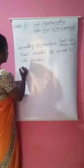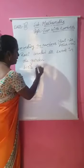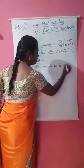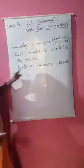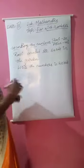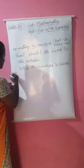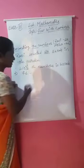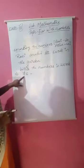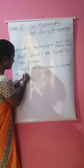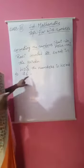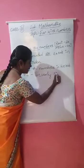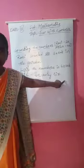Next topic: write the numbers in words. You know that last year we wrote numbers in words. For example, seventy-six — how will you write it? What is in the ones place and tens place? It is seventy-six, so we will be writing it as seventy-six.